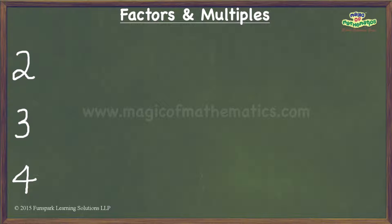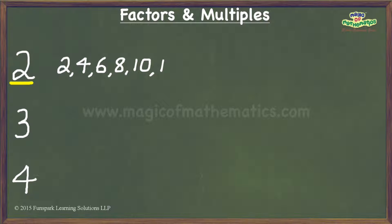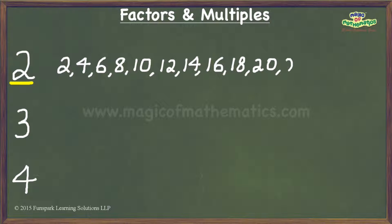Let us begin by writing down the first few non-zero multiples of these three numbers. For the number 2, the first few non-zero multiples are 2, 4, 6, 8, 10, 12, 14, 16, 18, 20, 22, 24, 26 and so on.